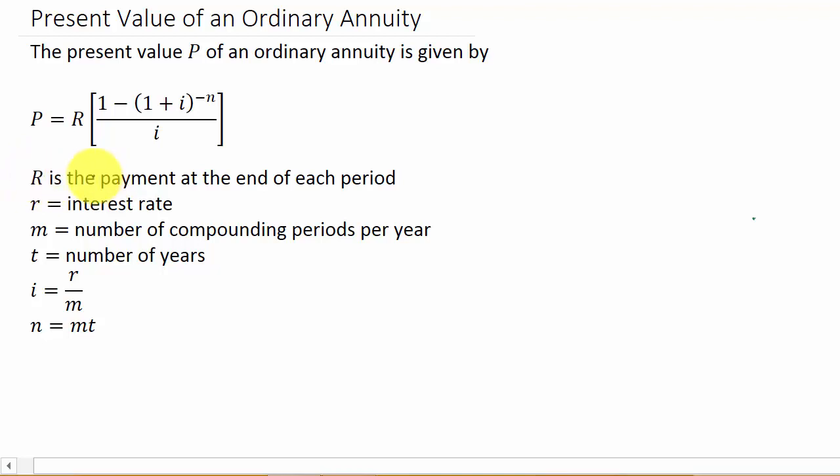So R, the big R here, is the payment at the end of each period. Little r is your interest rate. M is the number of compounding periods.